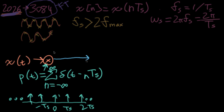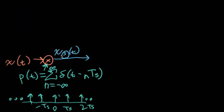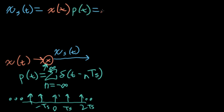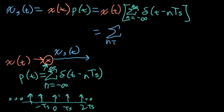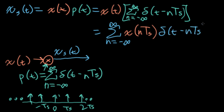Let's call the output xs of t, where the subscript s stands for sampled signal. So xs of t equals x of t times p of t. Plugging in the expression for p of t explicitly and pulling x of t inside the sum, we can use our usual simplification trick for Dirac delta functions. This now looks like x of n times TS — this is using our usual delta function simplification.